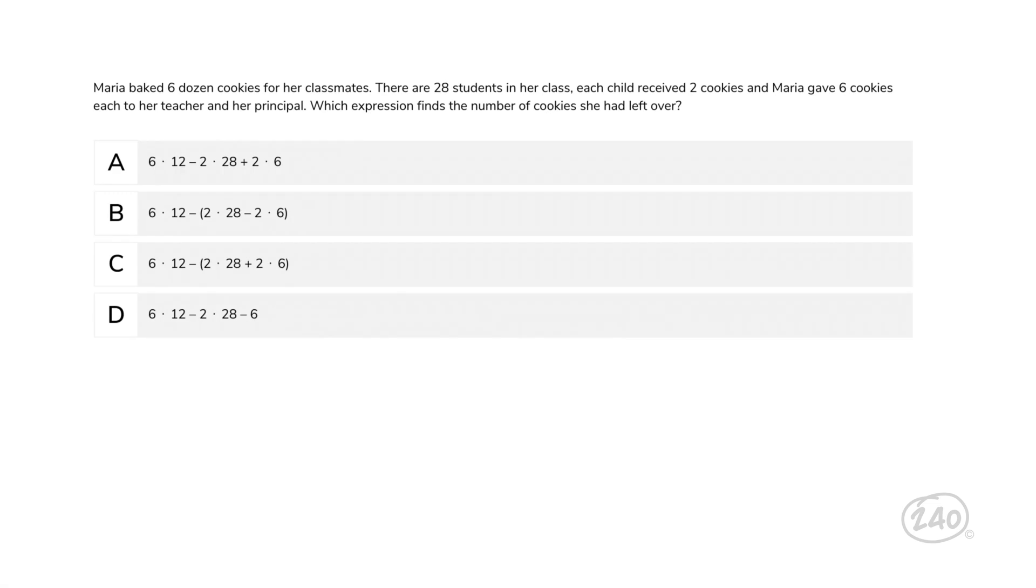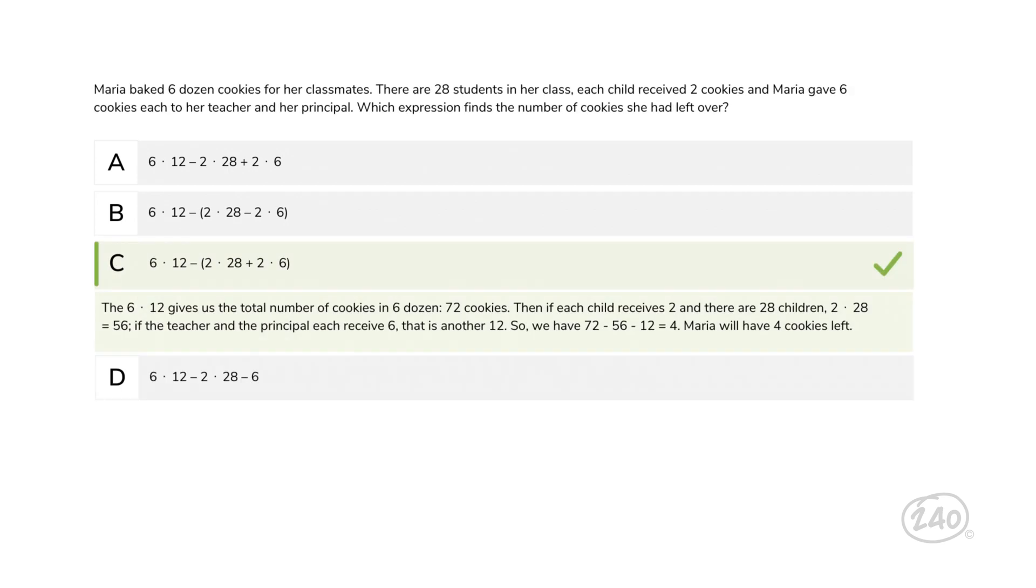Here's the next question. Maria baked 6 dozen cookies for her classmates. There are 28 students in her class, and each child received 2 cookies. And Maria gave 6 cookies each to her teacher and her principal. Which expression finds the number of cookies she had left over? This one can get tricky. Take a moment and think carefully about the phrasing in this question. Maria starts out with 6 dozen cookies, or 6 times 12. Then she starts giving cookies away, so we need to subtract. Each student receives 2 cookies, so that's 2 times 28. The principal and her teacher get 6 cookies each, so that's 6 times 2. Let's add up all the cookies she gives away and put them in parentheses. So then the answer is C.